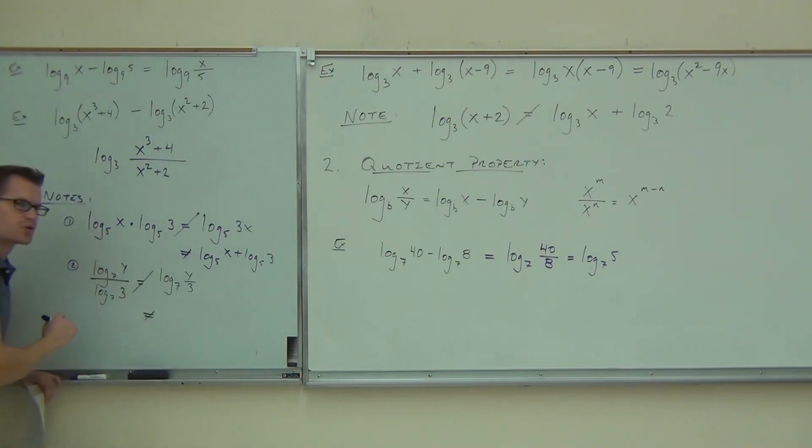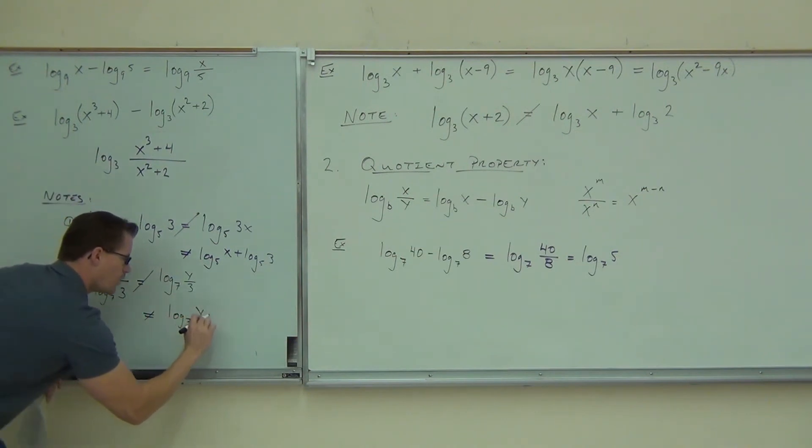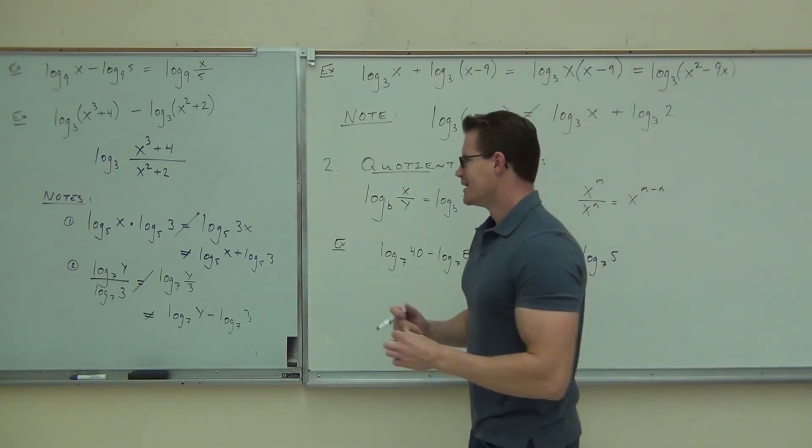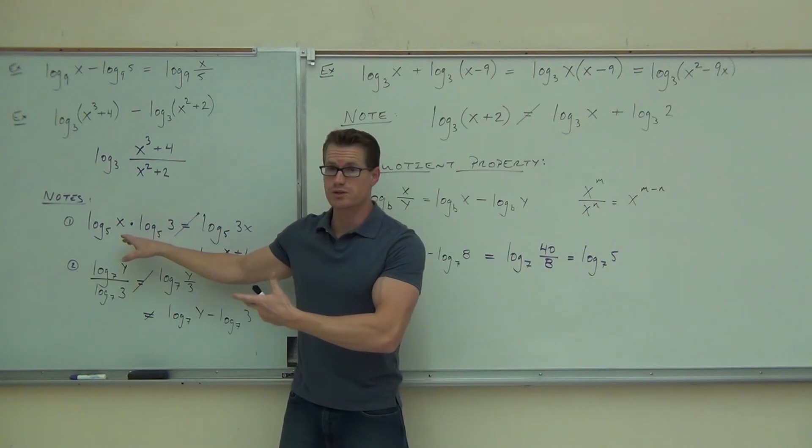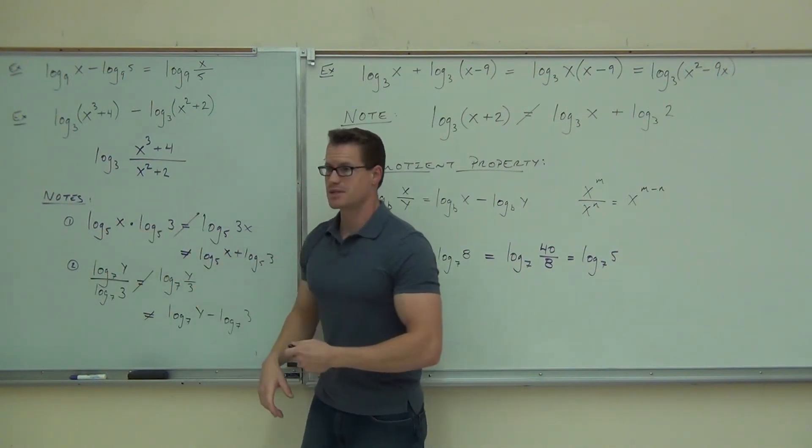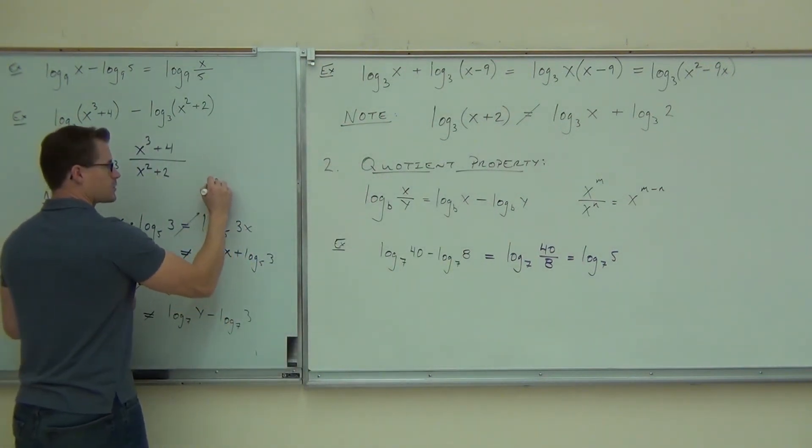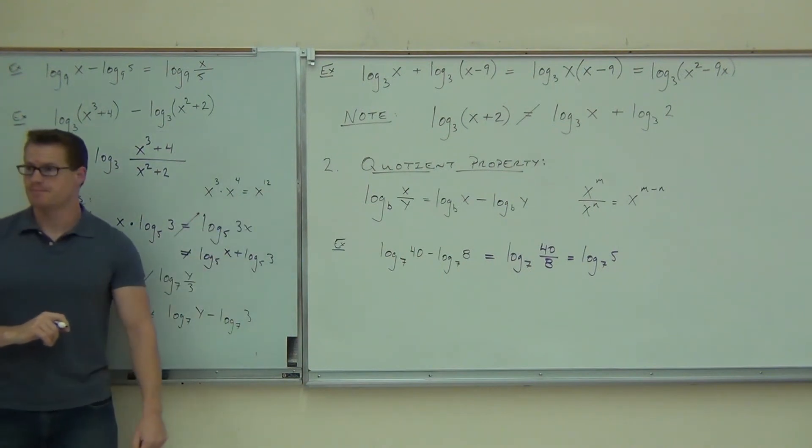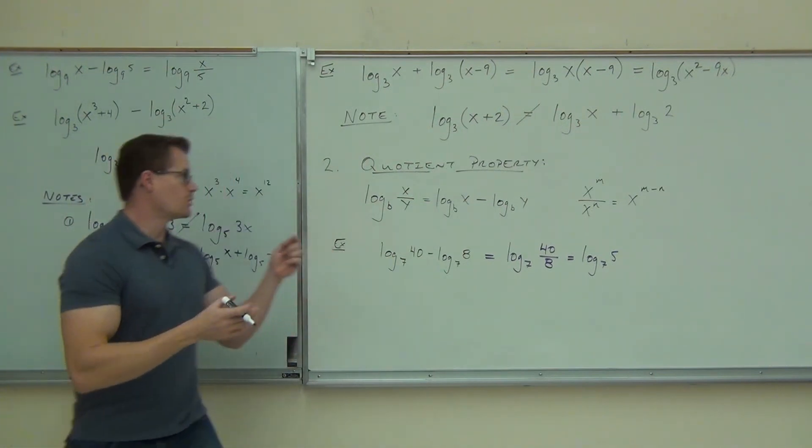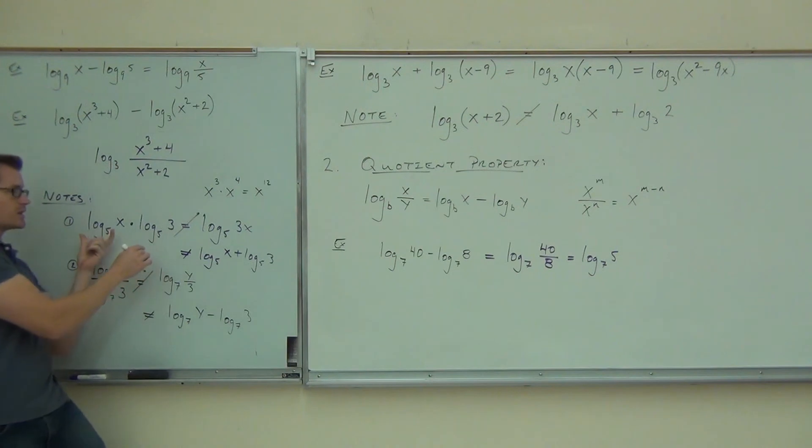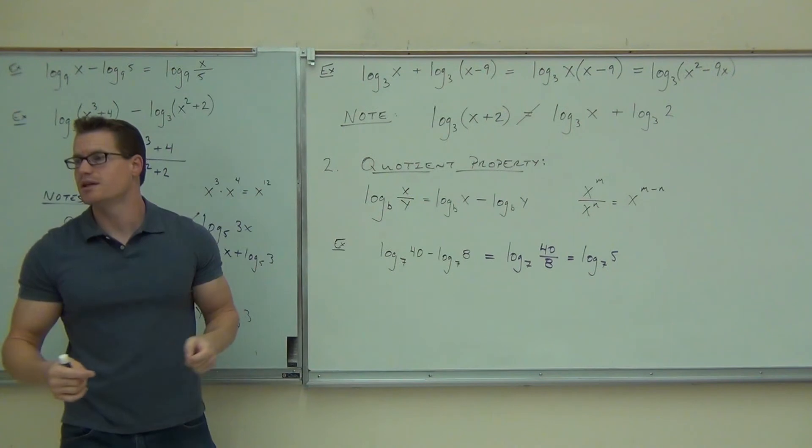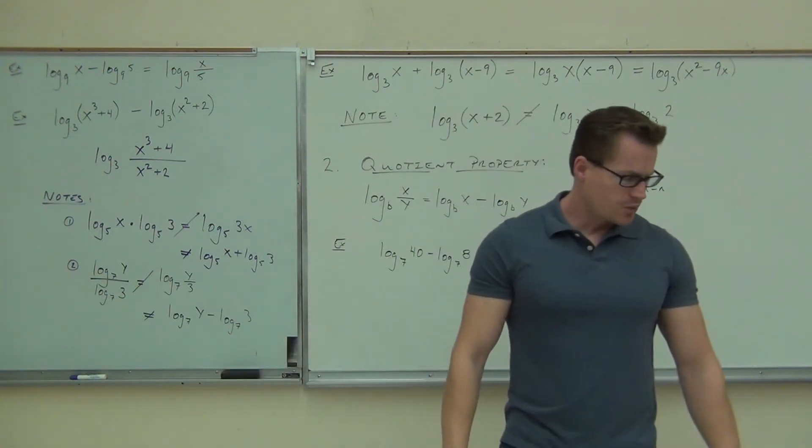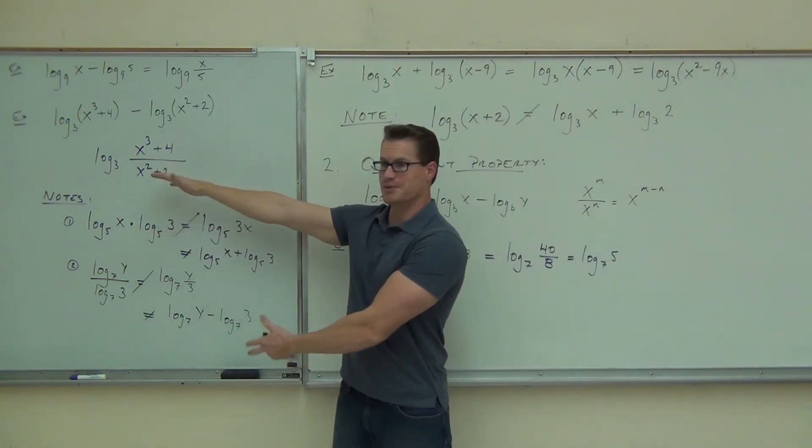Also, this doesn't equal subtraction. You can't split this up by subtraction either. Or you can't do log 7y minus log 7 3. Neither of those things are equal. Those are pretty much the four most common mistakes that I see. I see a lot of this. This one looks like it should be possible, right? Because you think, oh, multiplication, multiplication. But here's what that comes down to. That would be like saying x to the third times x to the fourth equals x to the twelfth. Is that a true statement? No. That's x to the seventh, isn't it? It's not the same. They work like exponent rules. So you can't just multiply your exponents together. It doesn't work. It doesn't compute.